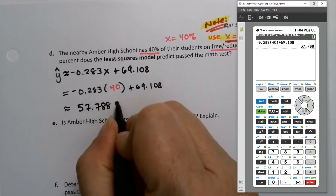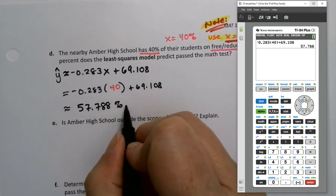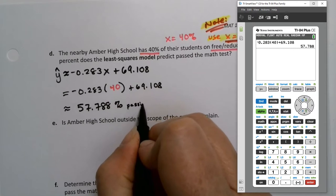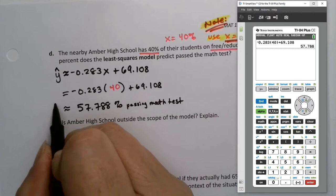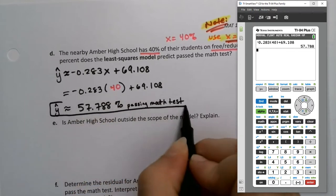Now what is its unit? It's percent, right? It's actually the percent passing the math test if you want to remember. Right, that's your guess. That's your prediction.